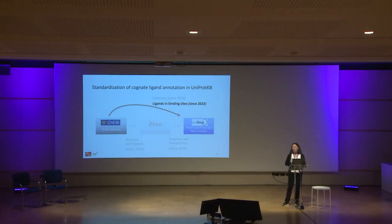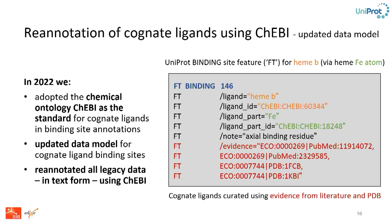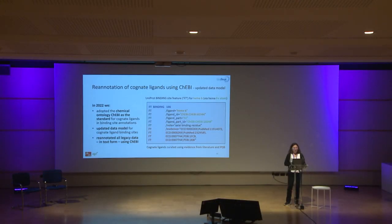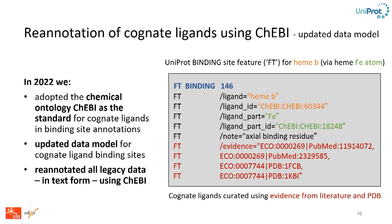Let's talk about the last step we did for standardization of ligands in UniProt — the one released last year on ligands in binding site annotations. Prior to 2022, we used text labels to describe biologically relevant ligands in binding site annotations. Last year we performed a major upgrade, switching to using the chemical ontology ChEBI as a standard to describe ligand data. We updated the data model, which allows capturing the nature of the ligand and the possibility to specify a part of the ligand — for example, that the protein residue at position 146 binds the iron atom of heme. This curation is done based on evidence from literature and PDB 3D structures.